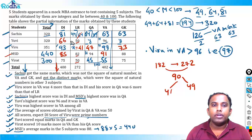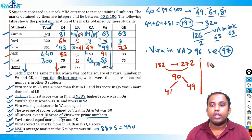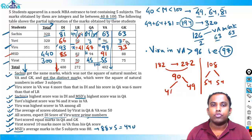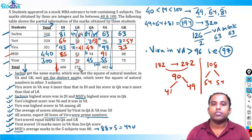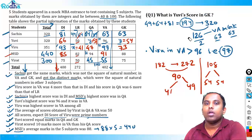UV scored equal marks in QA and GK (both y). UV's total is 320: 66 + 50 + 96 = 212, leaving 108. Divided by 2, QA = GK = 54. The table is now completely filled.